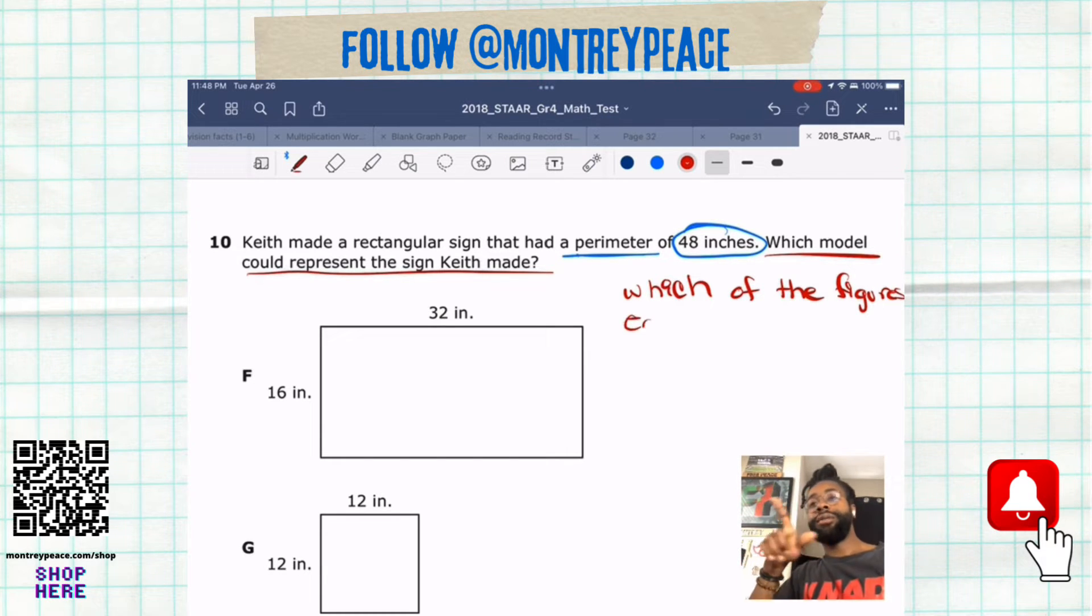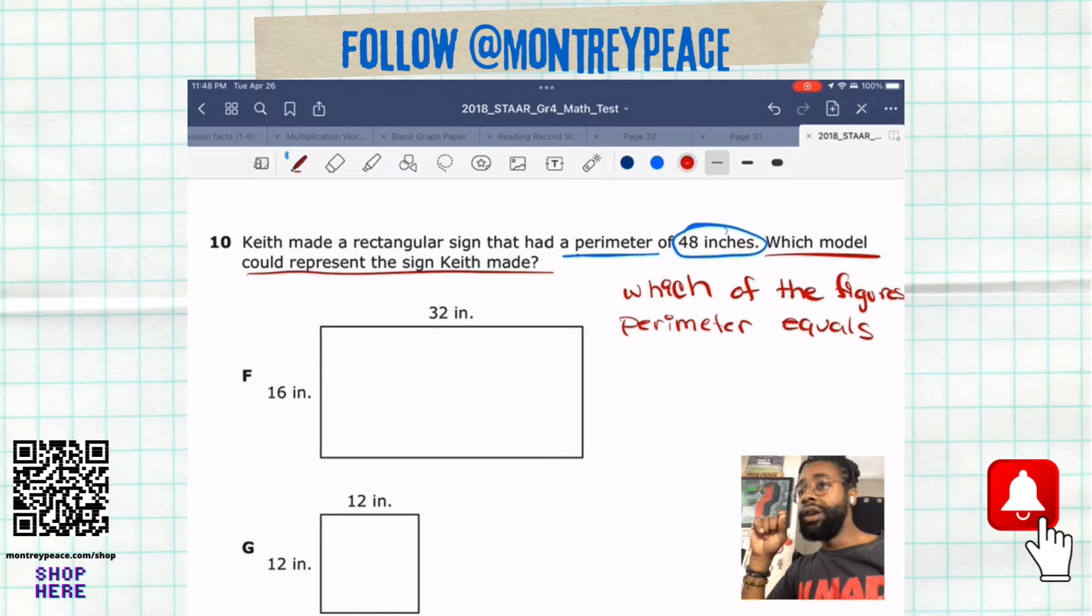So remember, perimeter is the distance around an object, the outside of the object. You add up all the outside, every single side that is on the outside, and that will give you the perimeter of that particular object. Area is the inside, perimeter is the outside.